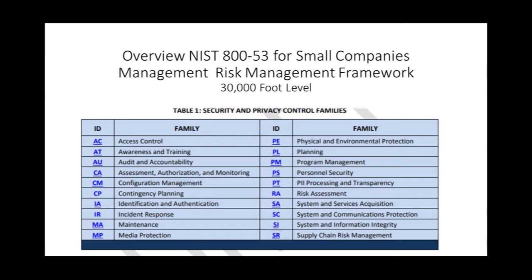This is the 30,000-foot level. The table shows the specific families: AC is access control, AT is awareness and training, AU is audit and accountability, CA is assessment authorization and monitoring, CM is configuration management, CP is contingency planning, IA is identification and authentication, IR is incident response, MA is maintenance, MP is media protection, PE is physical and environmental protection, PL is planning, PM is program management, PS is personnel security, PT is PII processing and transparency, RA is risk assessment, SA is system and services acquisition, SC is system and communications protection, SI is system and information integrity, and SR is supply chain risk management.